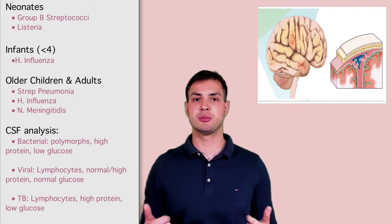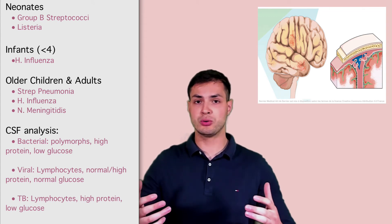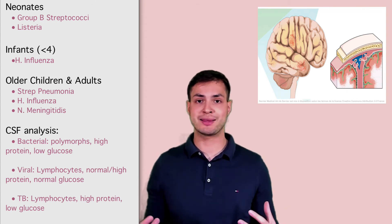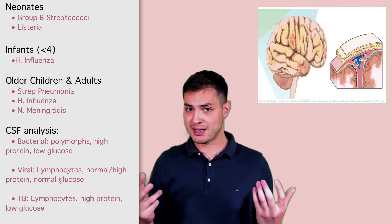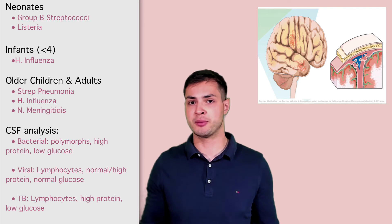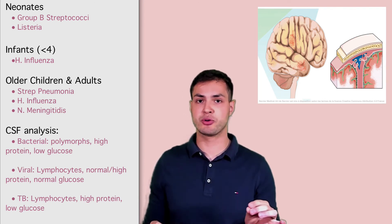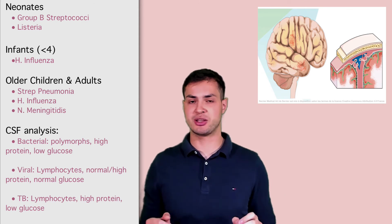So in bacterial, this is polymorphs, which means it's neutrophils. They would have low glucose because all the bacteria has eaten up all the glucose and that's how you remember it. They would be high in protein because bacteria are full of protein. So if you get a stem with polymorphs, high protein, low glucose, that's bacterial meningitis.